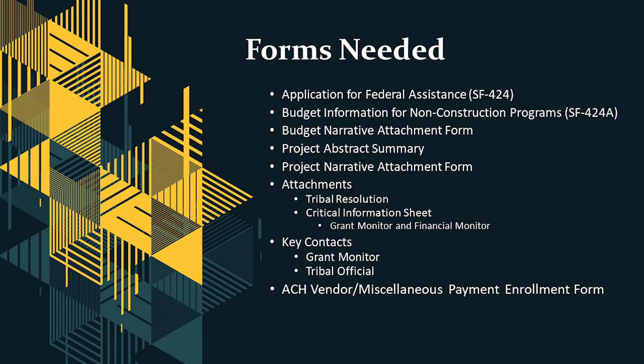Forms required for submission include the SF-424, Application for Federal Assistance; the SF-424A, Budget Information for Non-Construction Programs; a Budget Narrative Form; a Project Narrative and Abstract Summary; and attachments including a Tribal Resolution, a Critical Information Sheet, a Key Contact Sheet, and the ACH Vendor Payment Enrollment Form. This last form also requires your ASAP enrollment number.